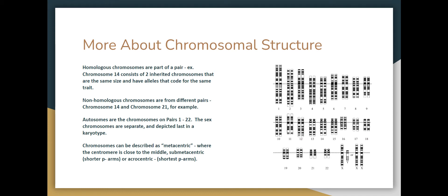Homologous chromosomes — just to give you a vocabulary — they're part of a pair. See chromosome one and how they match. They have the same gene loci, they are the same length, they have the same amount of DNA, and they code for the same traits. The difference between the two — the maternal and the paternal — are the alleles, those variations of trait expression. So that's a homologous chromosome.